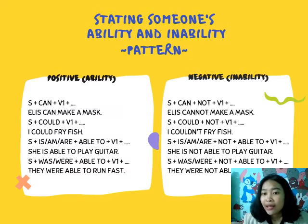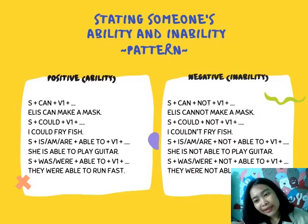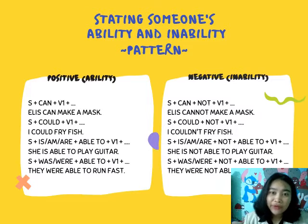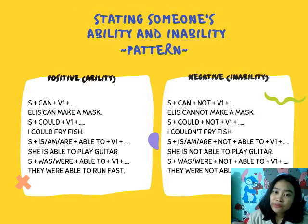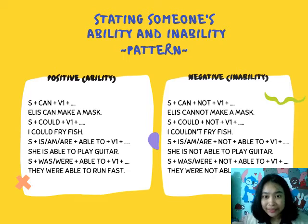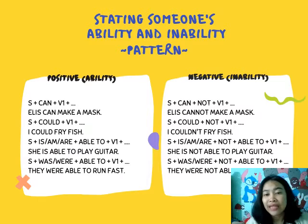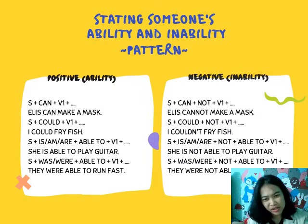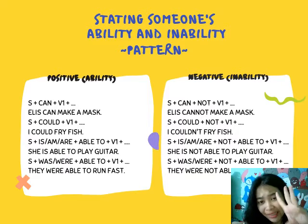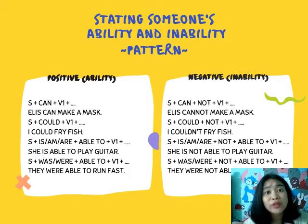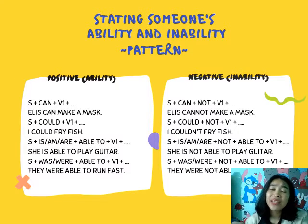Let's read together the examples of inability sentences. First: 'Alice cannot make a mask.' Second: 'I couldn't fry fish.' Third: 'She is not able to play guitar.' Last: 'They were not able to run fast.'